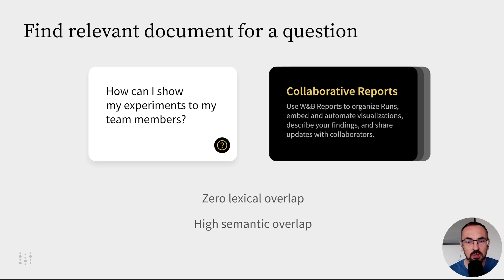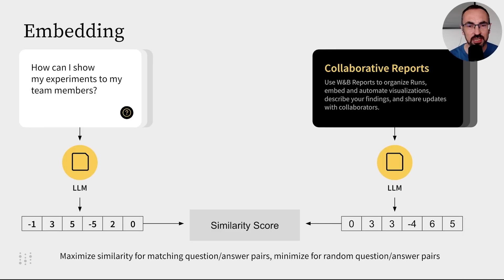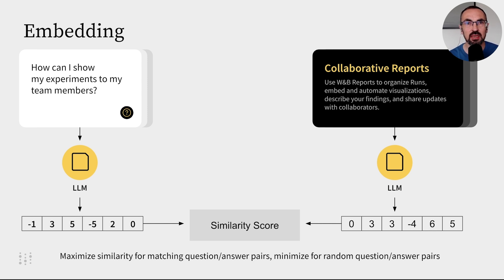We use embedding models to find these semantically related documents for our questions. By training embedding models on large question-answer pair datasets, such as Stack Exchange, embeddings can effectively map questions and documents into a numeric space where we can compute similarity scores.